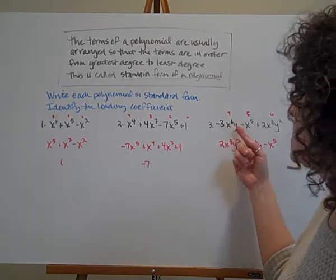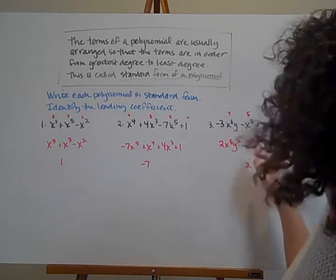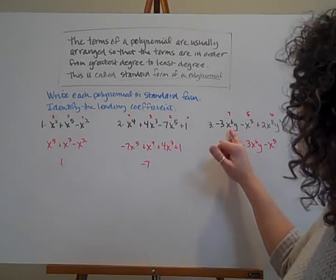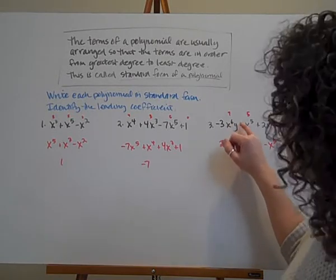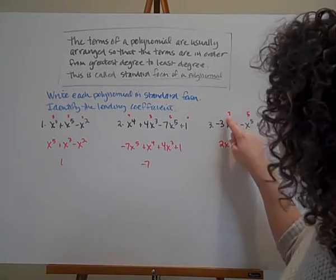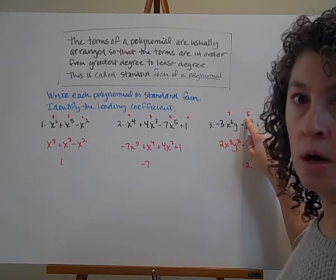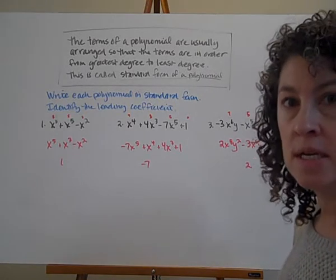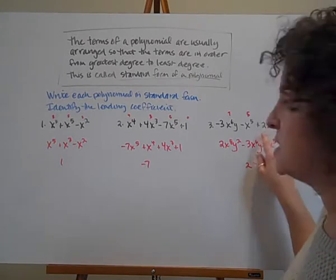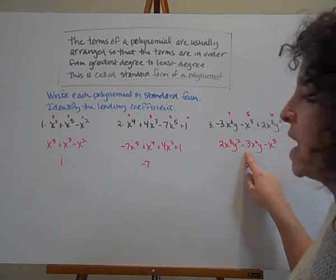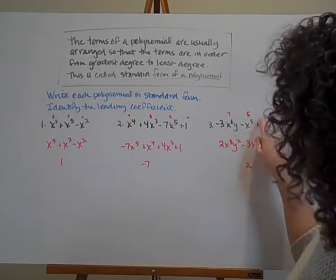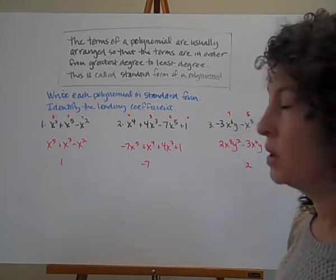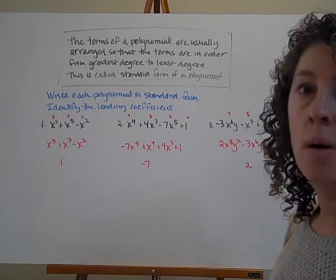The last polynomial: negative 3x to the sixth y, minus x to the fifth, plus 2x to the eighth y squared. With two variables, we sum exponents carefully. The first term has exponents 6 and 1, giving degree 7. The second term has degree 5. The third term has degree 8 plus 2, which is 10. Arranging in descending order: 2x to the eighth y squared, minus 3x to the sixth y, minus x to the fifth. The leading coefficient is 2. So polynomials are formed by adding or subtracting monomial terms.